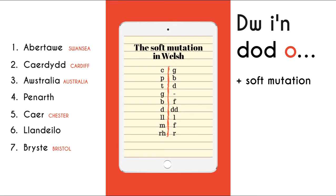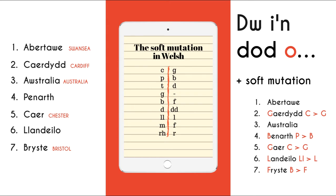Let's look at the place names. Abertawe is Swansea in Welsh. Caerdydd is Cardiff in Welsh. To say 'I'm from Swansea', I would say, Dwi'n dod o Abertawe. Abertawe starts with the letter A, and A is not in the list of letters that mutate, so it doesn't change. Now let's look at Cardiff — Caerdydd. The first question you ask yourself is: what letter does Caerdydd start with? Yes, it starts with C. Is C in the chart? Yes, it is, right at the top. So C would change to G after o.